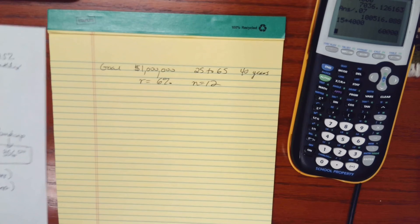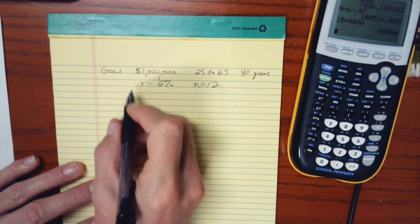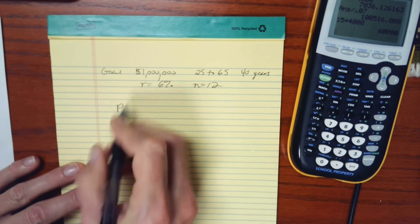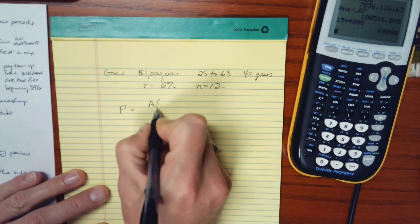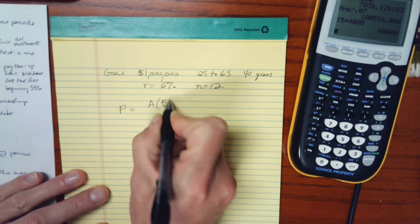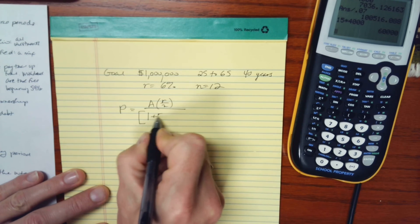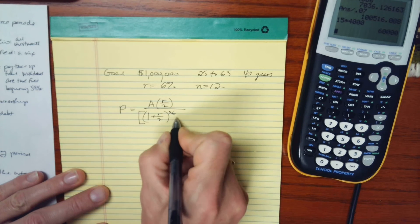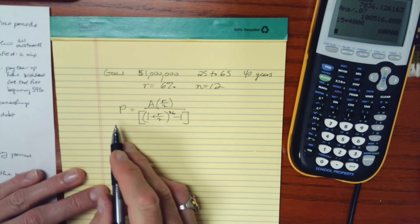So in this case, I'm going to take my formula and rearrange so that it's solved for the periodic contributions, the p. So that looks like this: a times r over n. And then in the denominator, I have 1 plus r over n to the nt minus 1. And so let's figure out in this scenario what we should set aside each month.